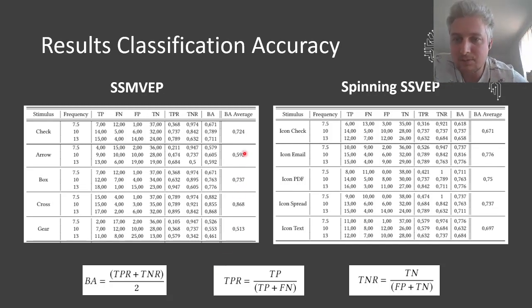So in this table, the most important part is the average for all the stimuli of the balanced accuracy. You can see our control stimulus, the checkerboard at the top, which produced 72% balanced accuracy. You can see all the motion-based stimuli were significantly above or above chance level.